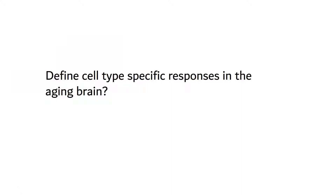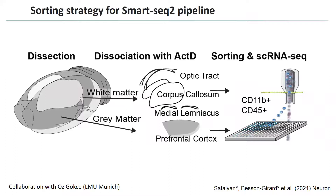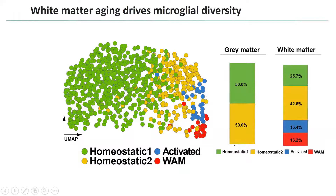To look at cell-type-specific responses in the aging brain, we teamed up with the Sketching lab at our institute. They devised a protocol for performing single-cell sequencing on white matter and gray matter separately, based on dissociation followed by actinomycin D incubation to prevent ex vivo transcription, then cells are sorted and subjected to the Smart-seq protocol.